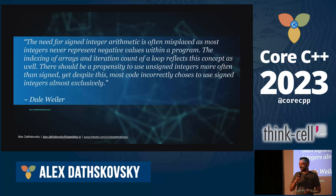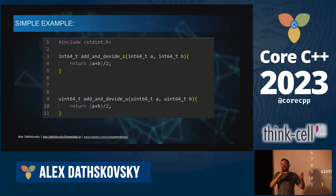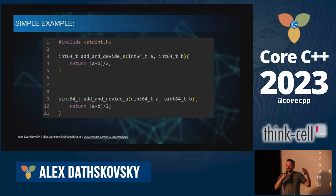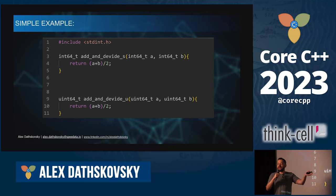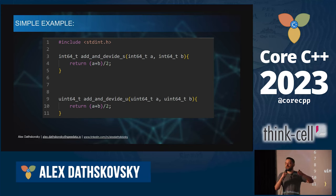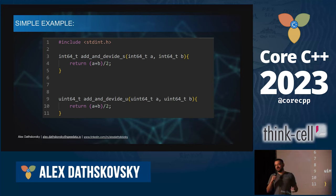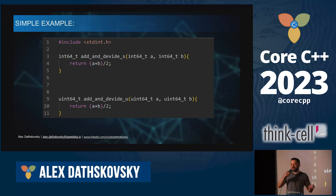To understand this, we'll start with a simple example — air-quoting 'simple'. We have two functions that do add-and-divide: one uses int64 and one uses unsigned int64. They both add A and B and divide by two. Which one do you think will be faster and produce better assembly code?